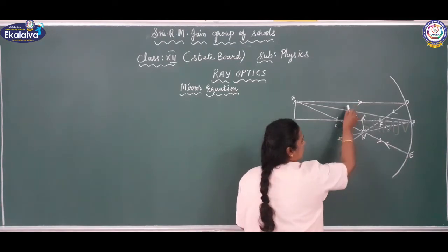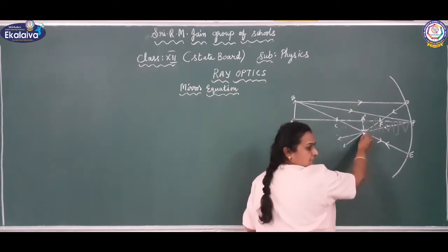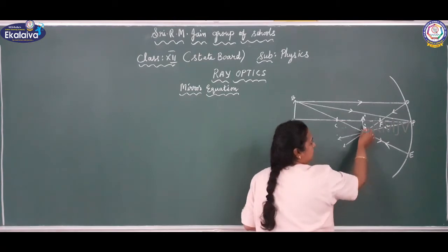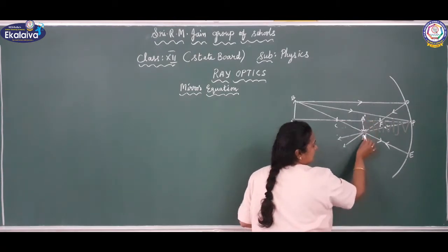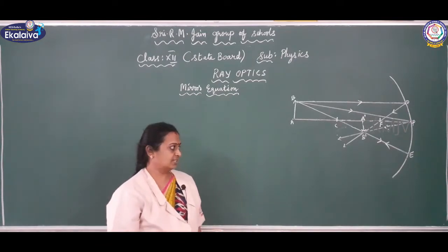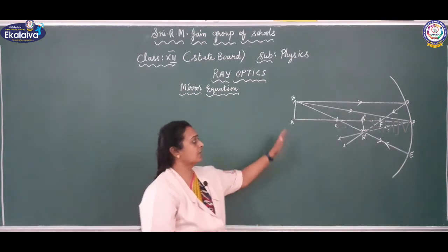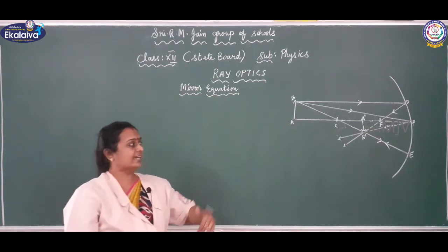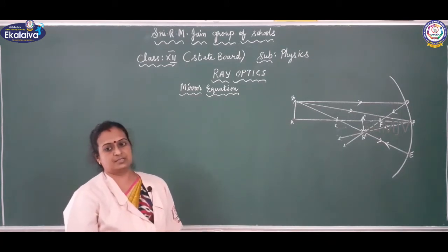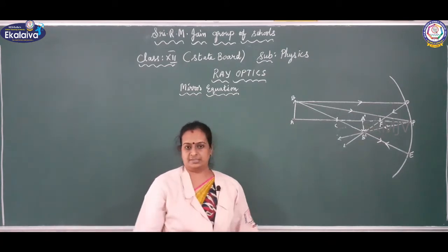All three rays meet at a point. When I draw a perpendicular, this is the position where the image is formed. So now I am going to derive the mirror equation based on this.